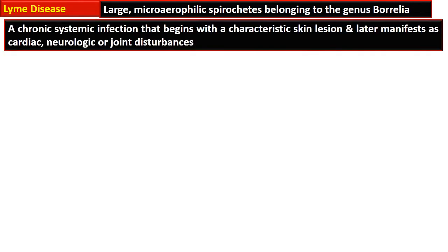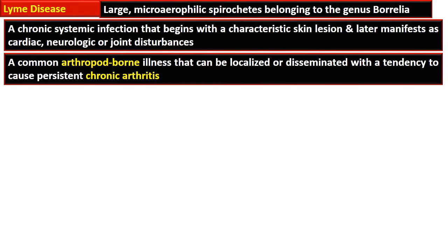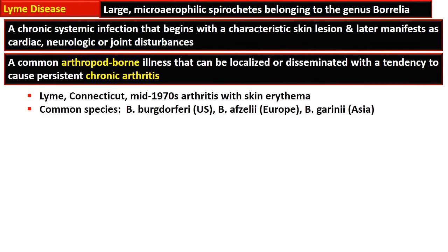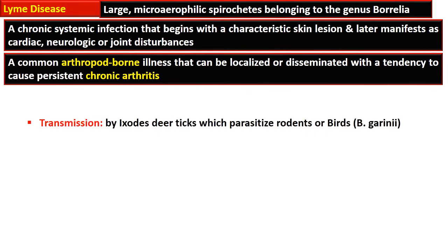Lyme disease is caused by large microaerophilic spirochetes belonging to the genus Borrelia. It is a chronic multi-system infection with a characteristic skin lesion and later involvement of cardiac, neurological, or joint disturbances. It is a common arthropod-borne illness that can be localized or disseminated with a tendency to cause persistent arthritis. It is named after Lyme, a town in Connecticut, where an epidemic in the mid-1970s produced arthritis with skin erythema in numerous patients.